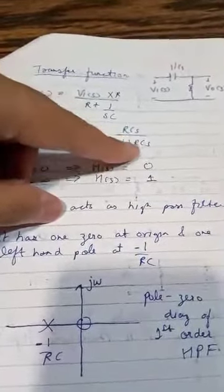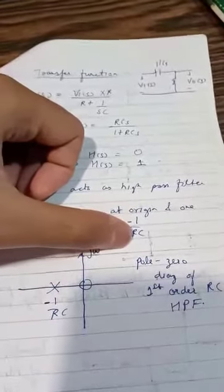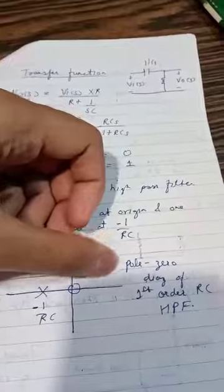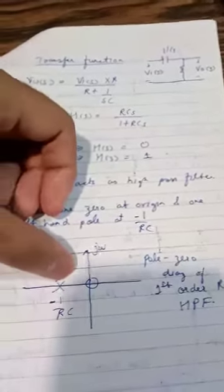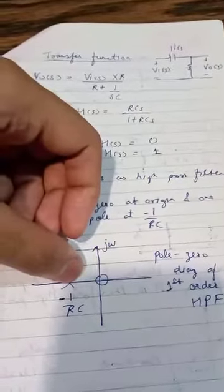The location of the pole will be minus 1 upon RC. This is the pole zero diagram of first order RC high pass filter. So this zero is at origin and this pole is at minus 1 by RC.